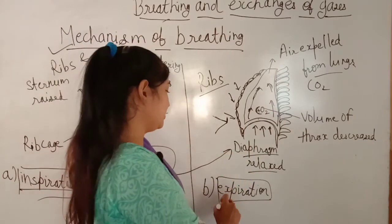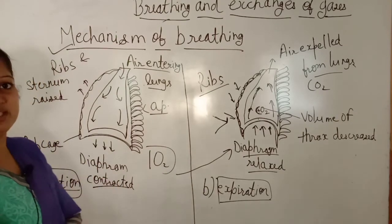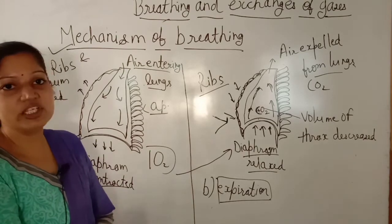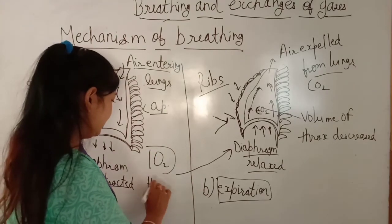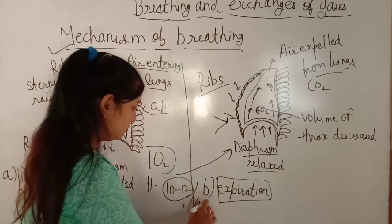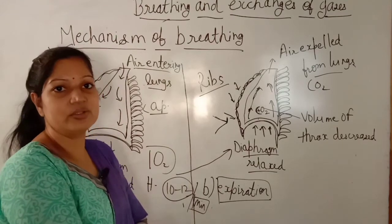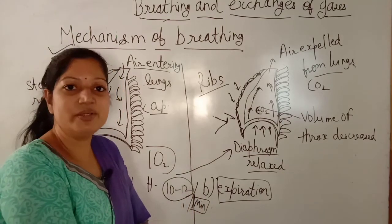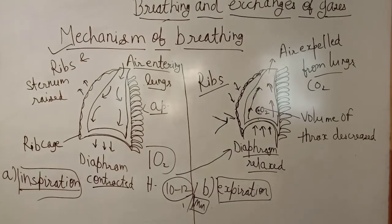This is the process of expiration, so these are the two mechanical processes of the human respiratory system. The normal breathing rate is 10 to 12 times per minute. Okay students, we will continue with more details in the next video.